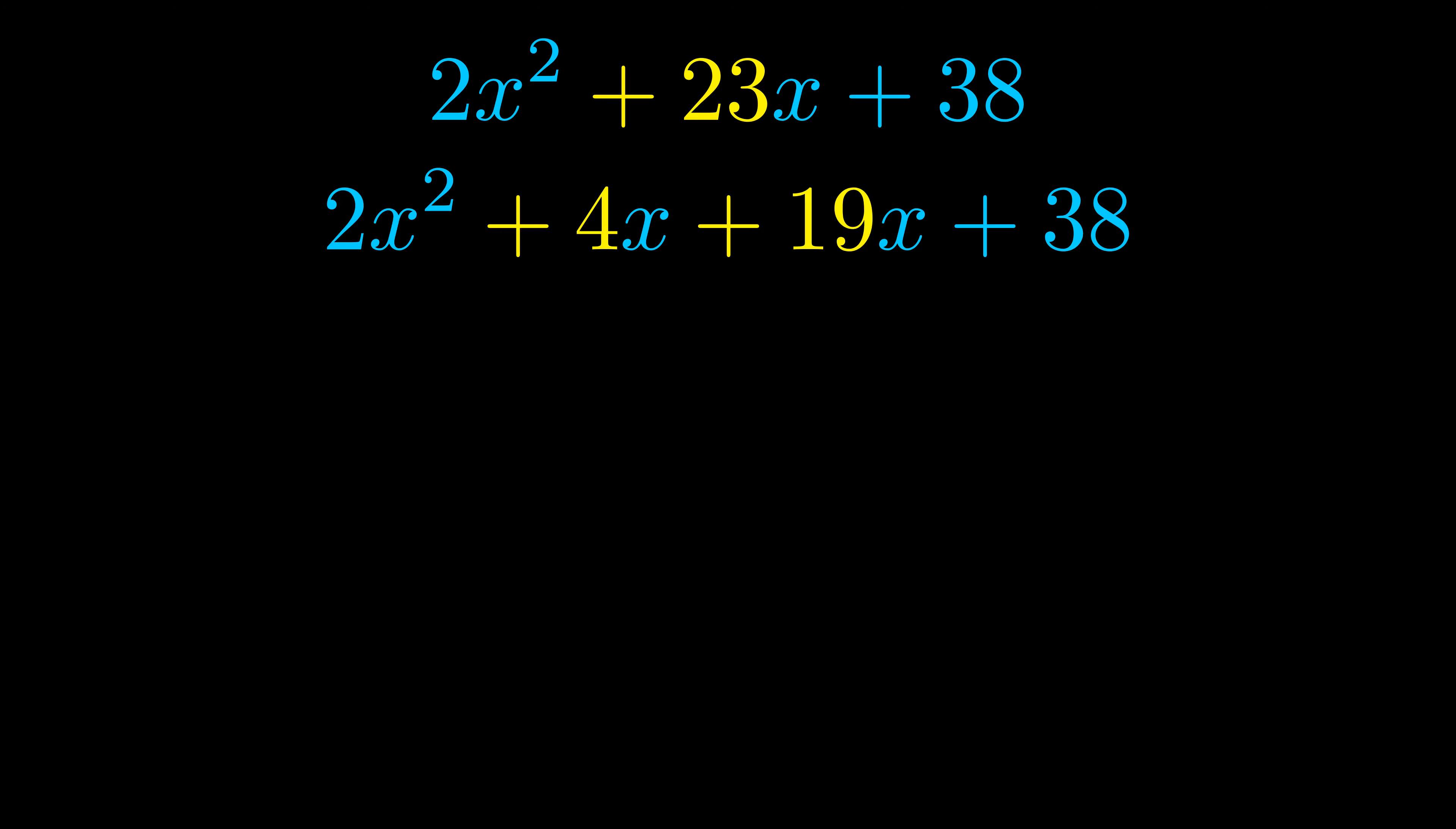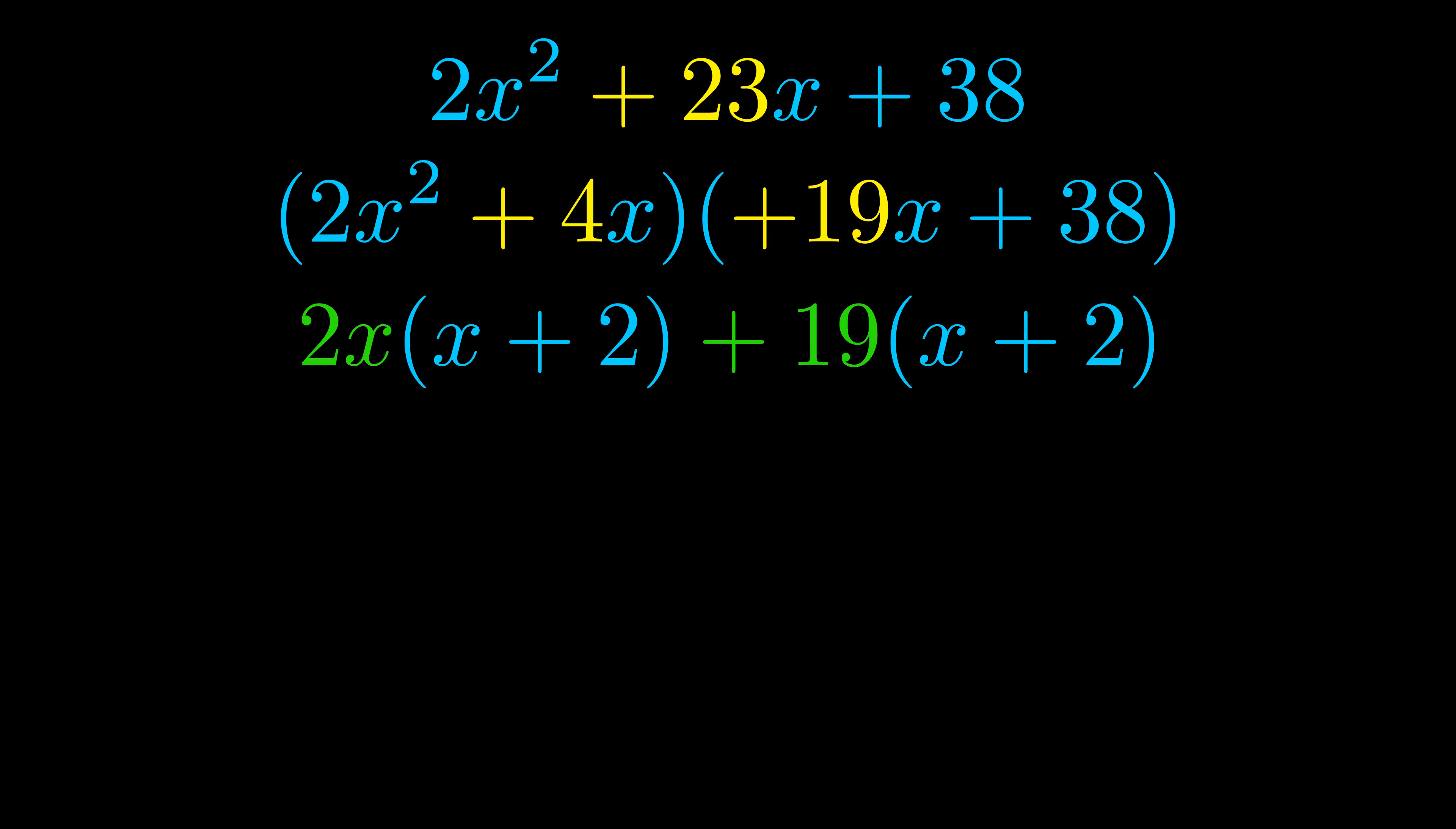Once we've done this we go ahead and we put parentheses around the first term and the last term and we do that so that we can take the greatest common factor out of both terms. We can see the greatest common factor is now outside in green.